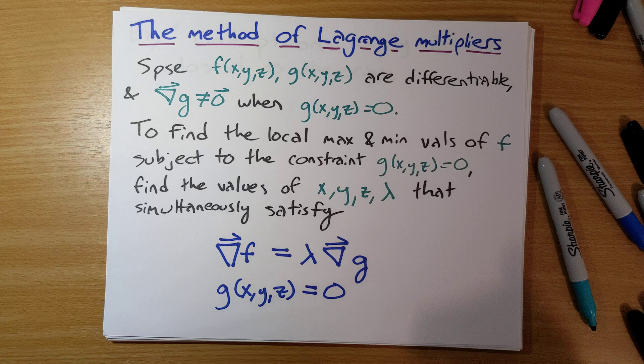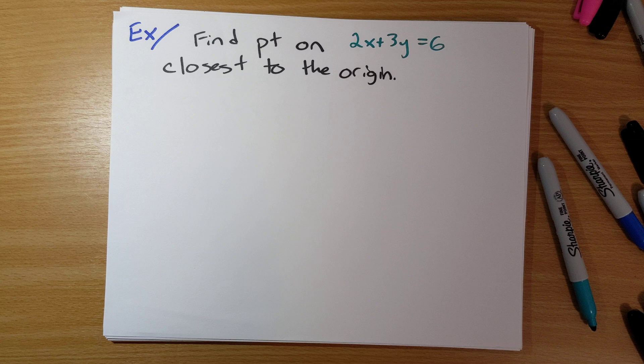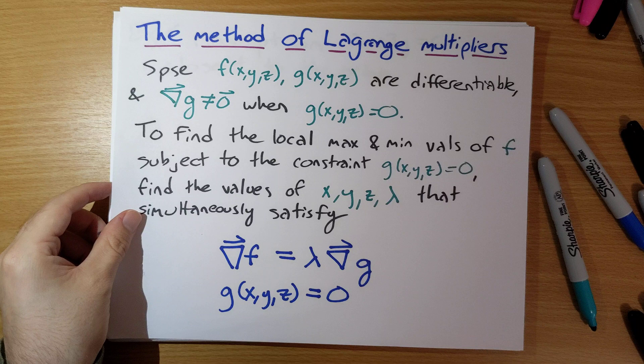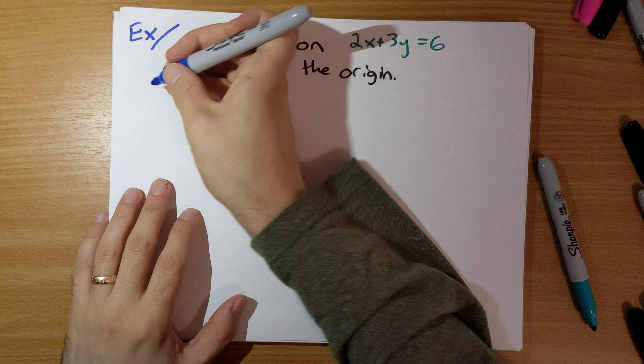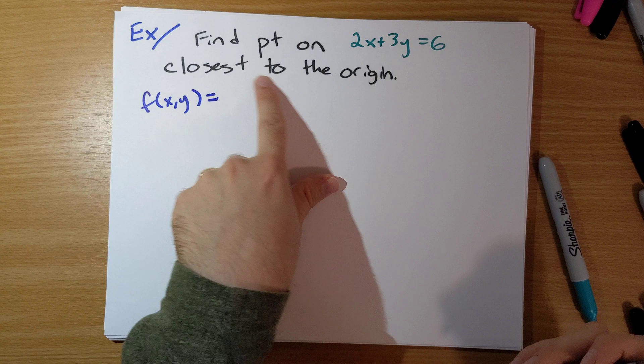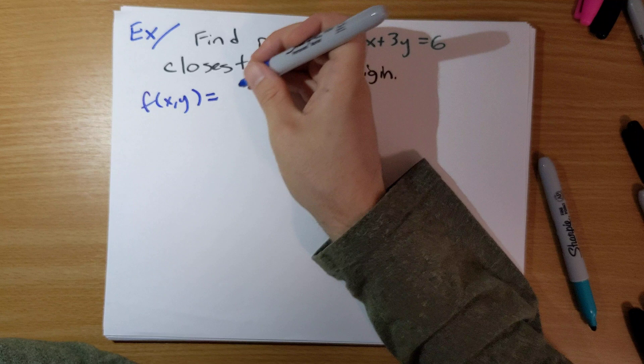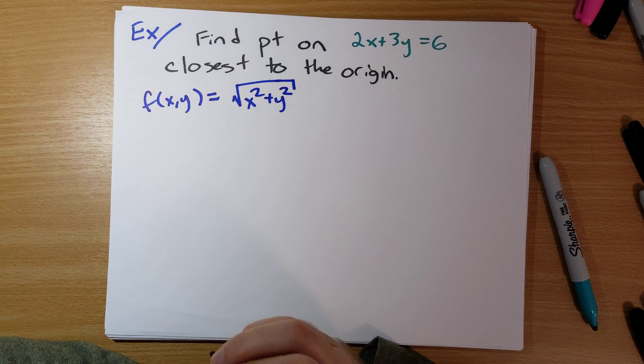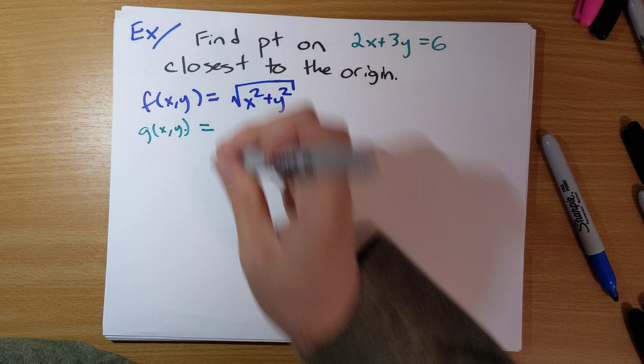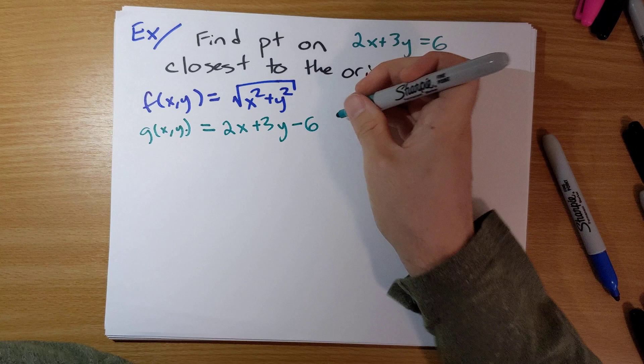So let's redo the problem that was our toy example using Lagrange multipliers. We need f of x, y and g of x, y. Our f of x, y is going to be the square root of x squared plus y squared, because we want to minimize distance to the origin. Our constraint g of x, y is going to be 2x plus 3y minus 6, and we want this expression to equal 0.